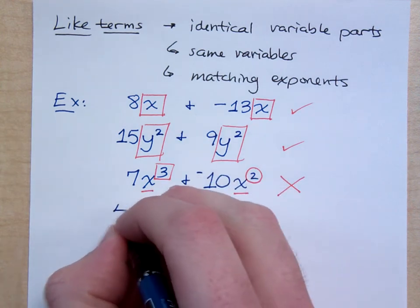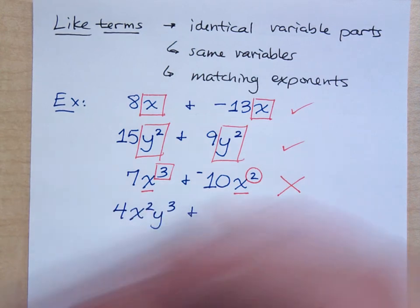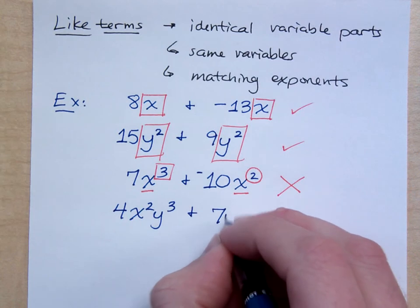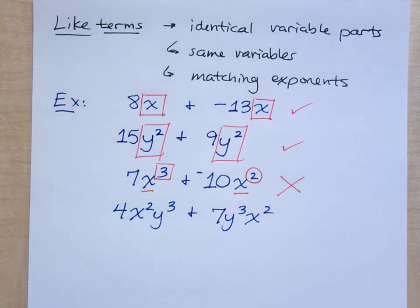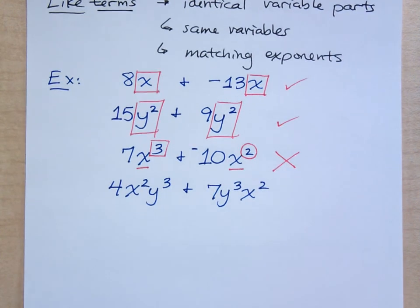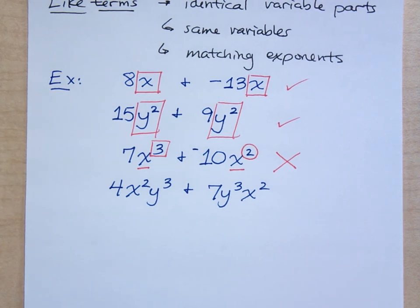What if I have 4x²y³ and 7y³x²? Are these guys like terms? You're saying they're not like terms but we could combine them? Elena, you think yes? What do I do? So we're split down the middle. You're undecided. Are you going to vote green?